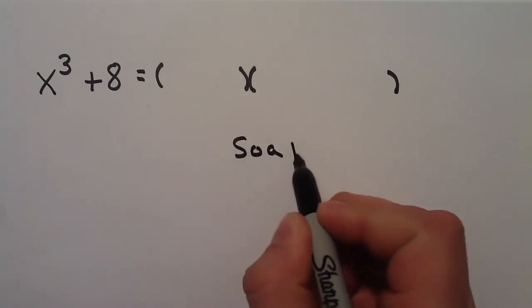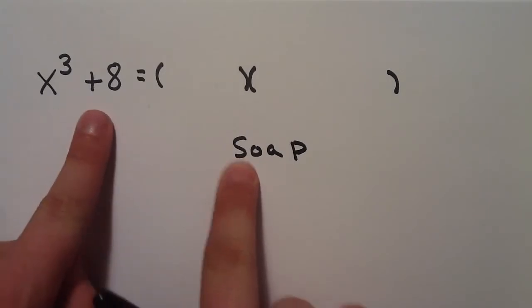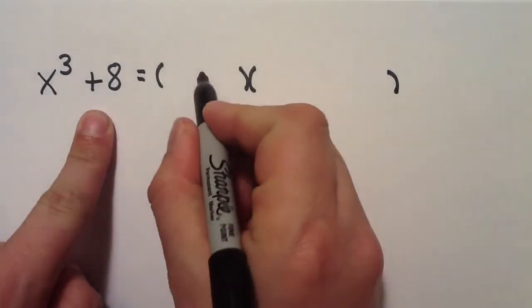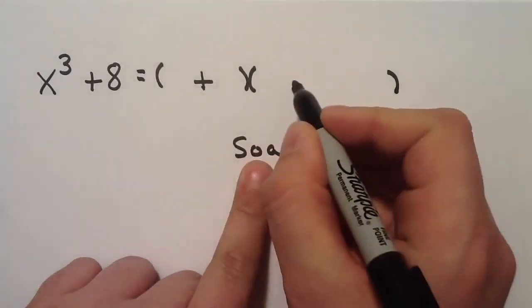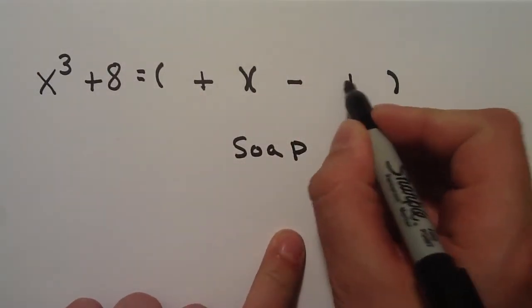Using that word SOAP again to determine my signs, the S tells me this sign and this sign are the same. The O says that this sign and this sign are opposites. The AP tells me that this last sign is always positive.